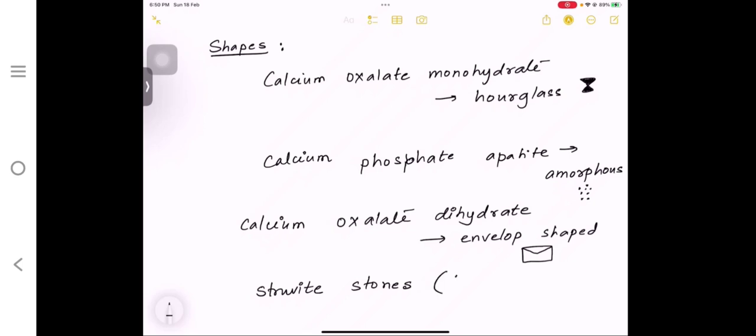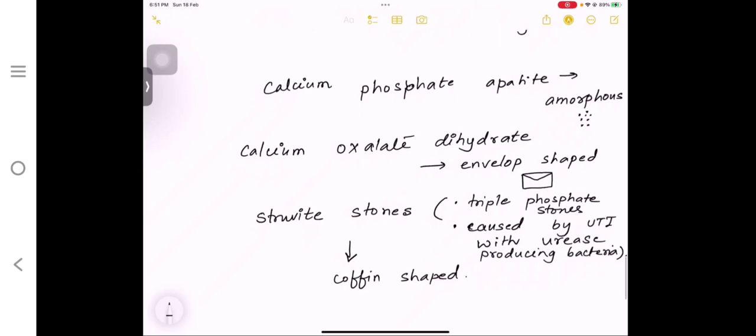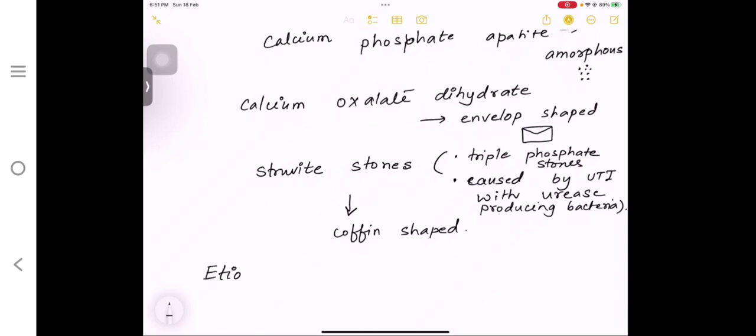We have the stone classification based on shape. Calcium oxalate monohydrate is hourglass shape. Calcium phosphate apatite is amorphous shaped. Calcium oxalate dihydrate is envelope shaped. And the struvite stones, which are actually the triphosphate stones, these are coffin shaped and are produced by urease-producing bacteria. I know this part is extremely rote learning. Just bear with me, but you have to learn because this is asked in your viva questions.